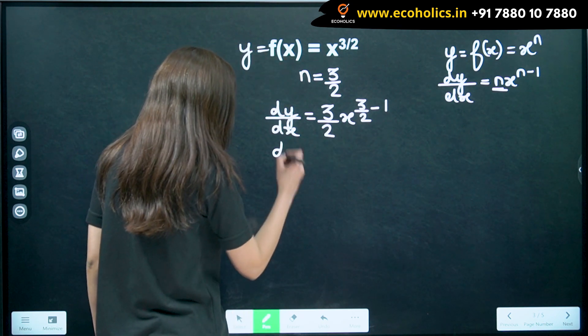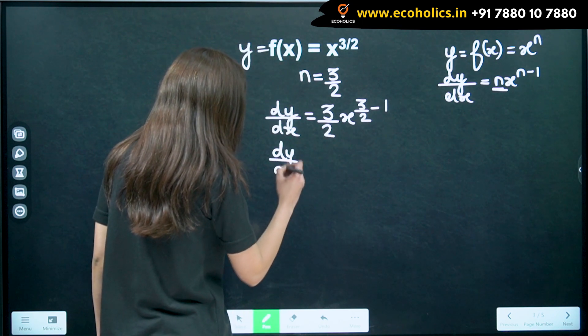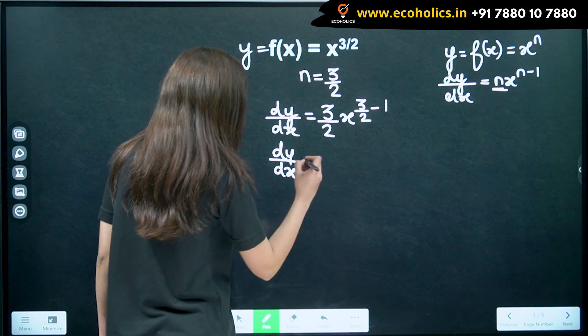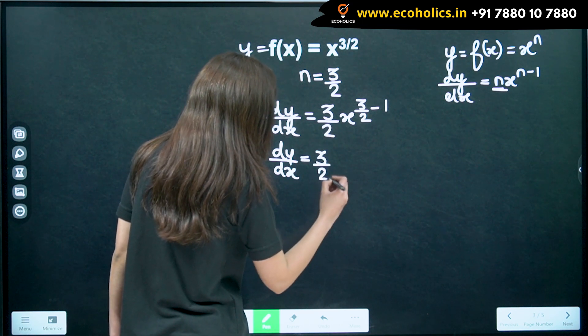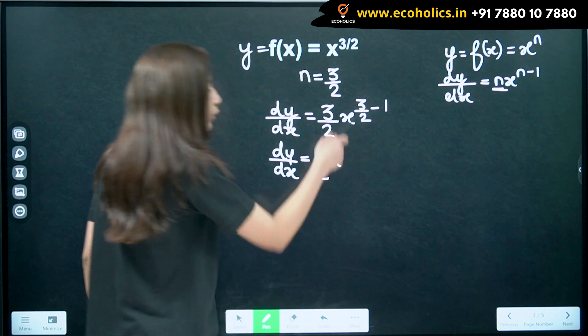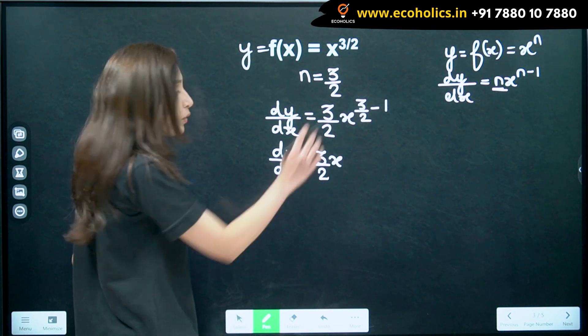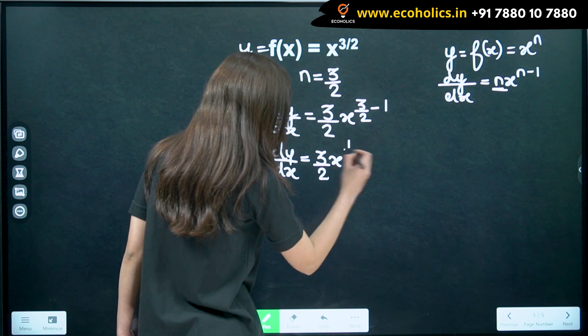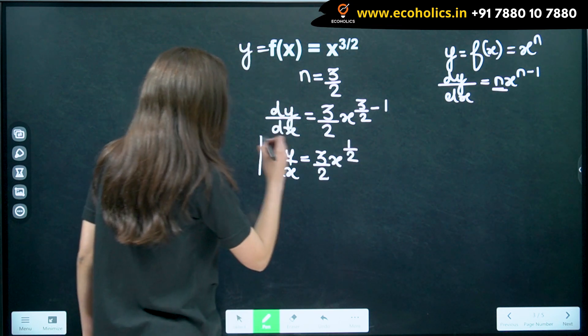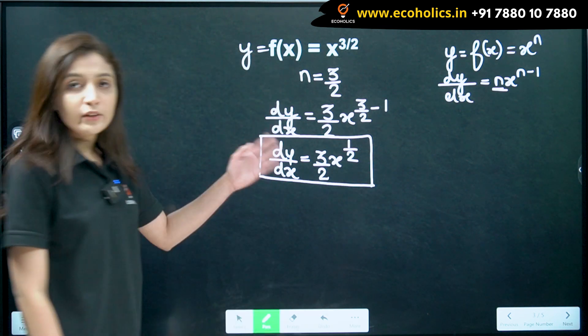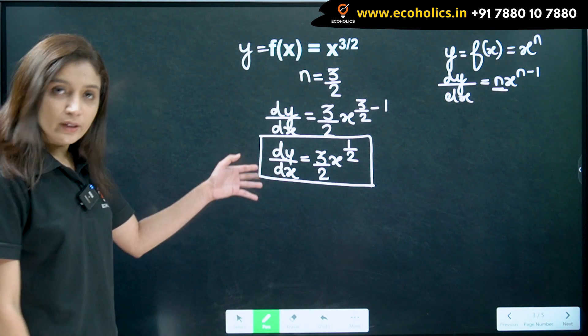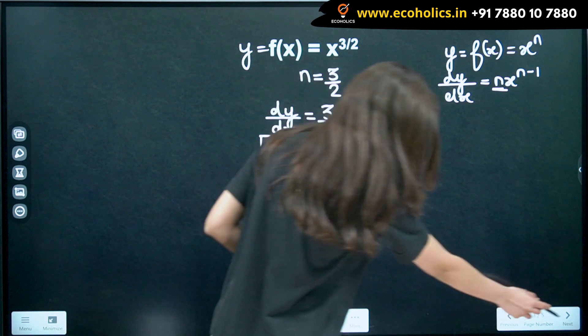So, now, what do we get? So, we have this becomes, this becomes 3 by 2 x raised to, now 3 by 2 minus 1 is nothing but 1 by 2. So, this becomes our derivative. This is so simple. So, similarly, we will be seeing other examples as well.